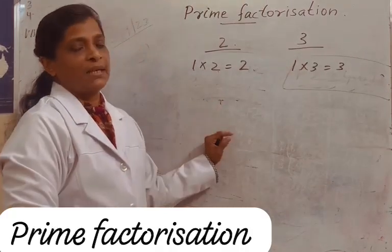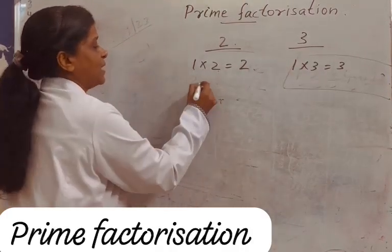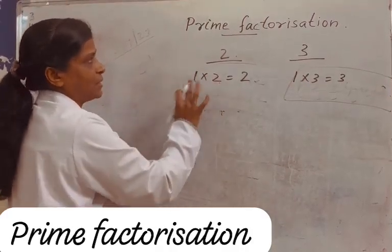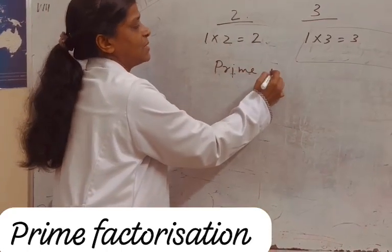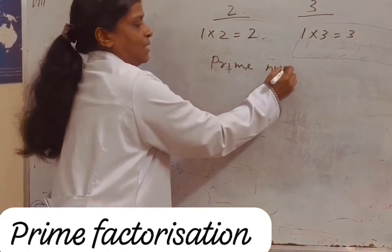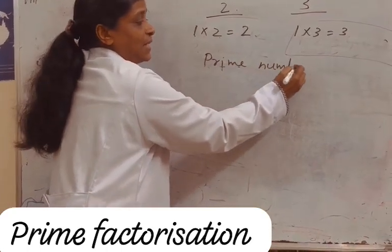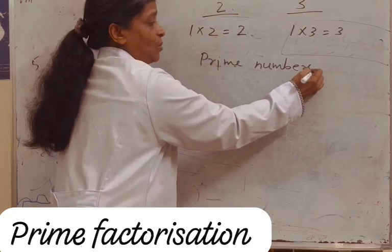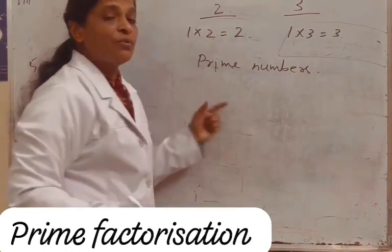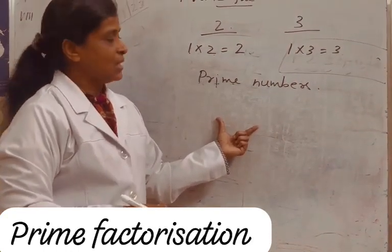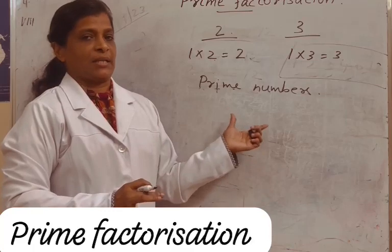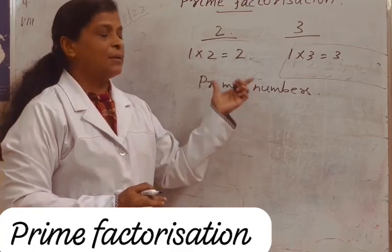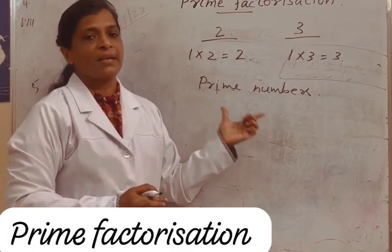Such numbers are called prime numbers. So what are prime numbers? Numbers that have only 2 factors — they are 1 and the number itself — are called prime numbers.